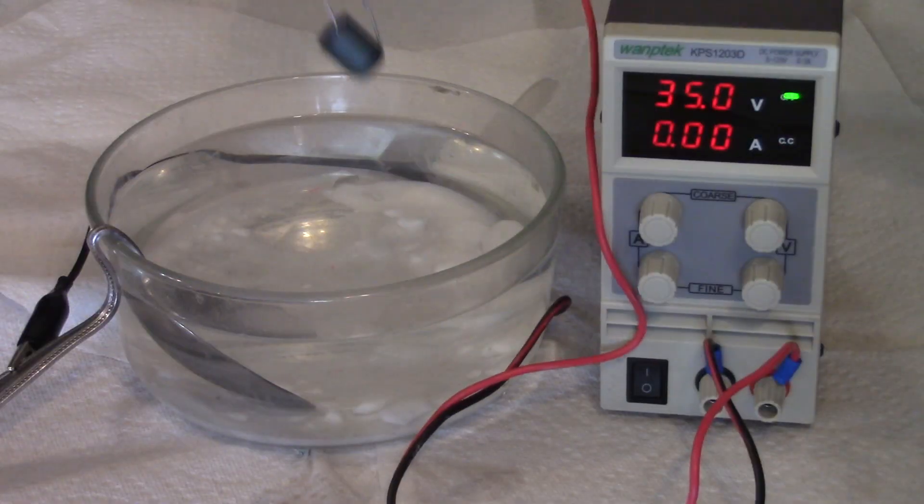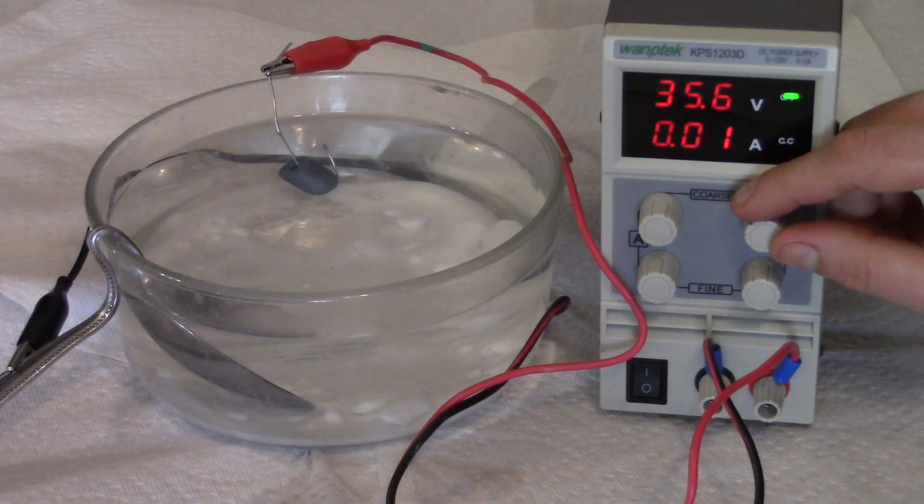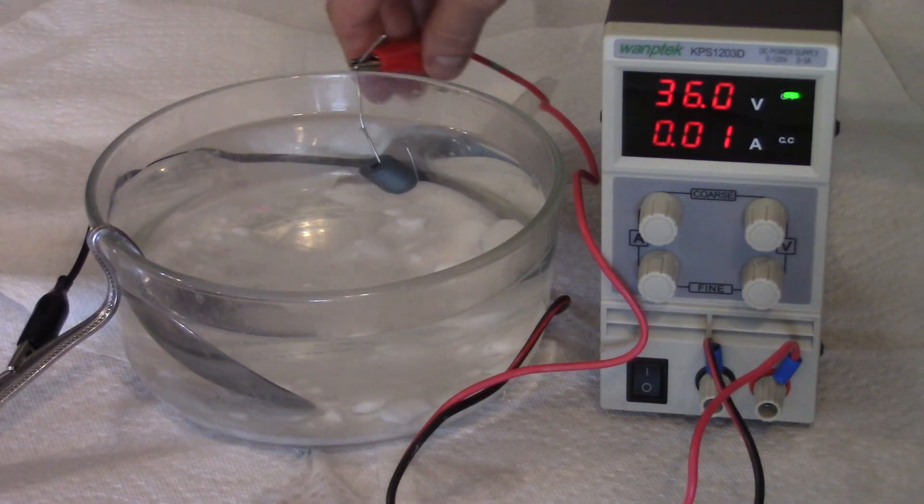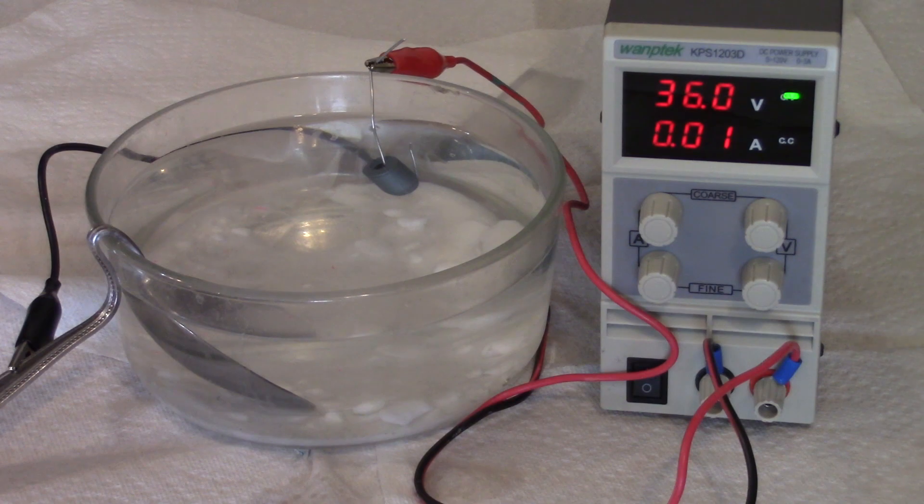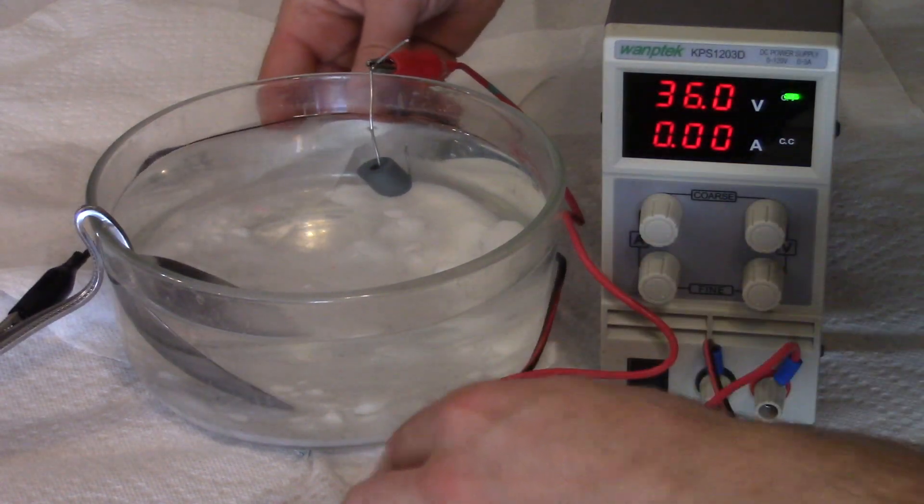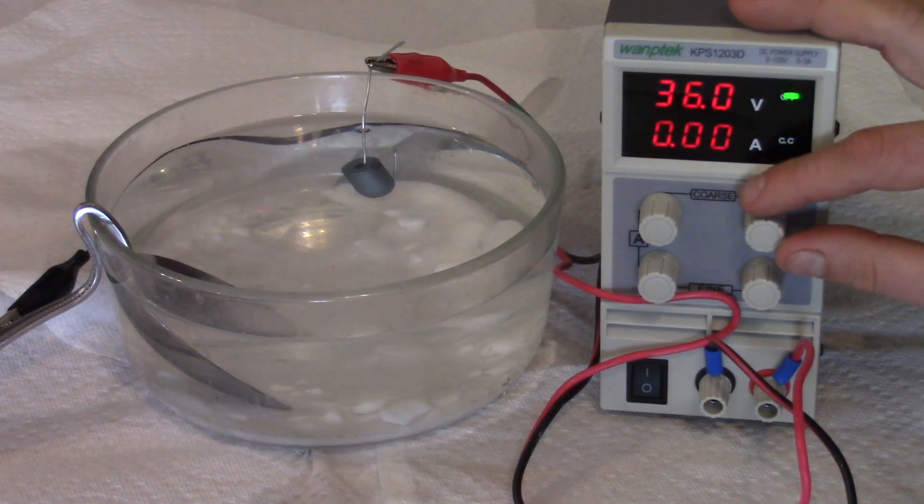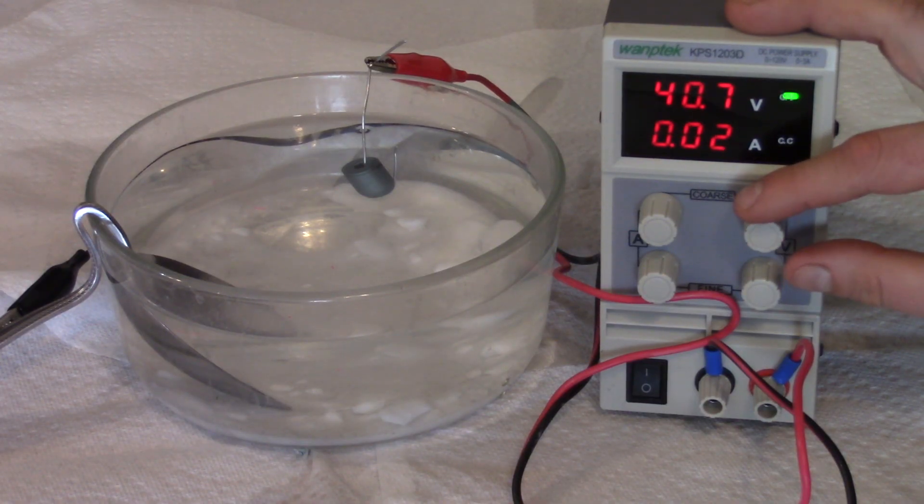At 35 you see we got a nice blueish silver kind of color. Let's see as we go up, it's gonna actually start I believe around here to fade kind of like back to like a metal looking color.